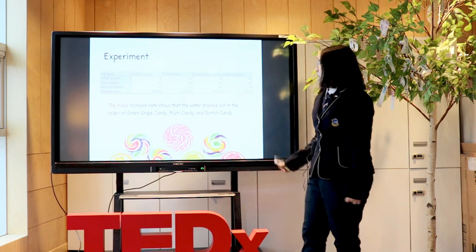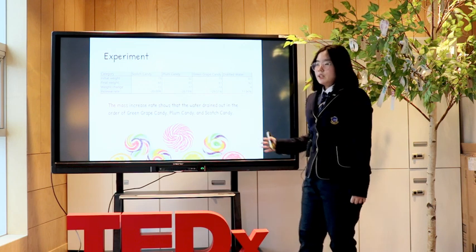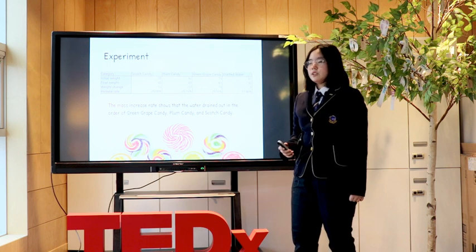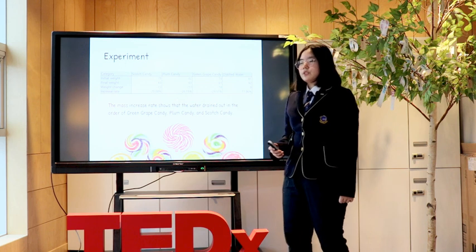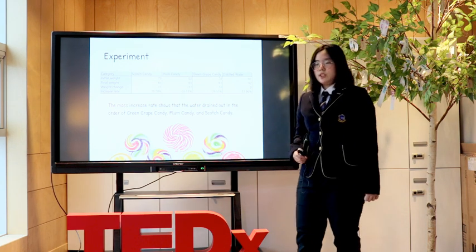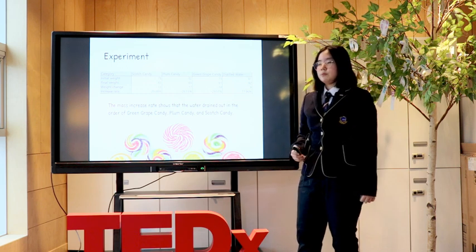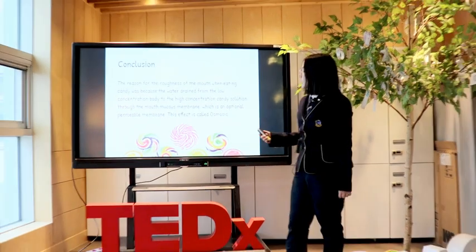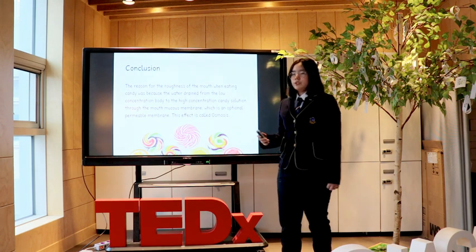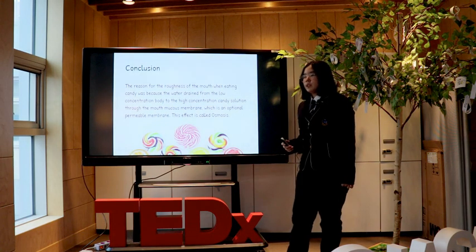The results of the experiment were as follows. The mass change ratio showed that water drained out in the order of green grape candy, plum candy, and scotch candy. This is proportional to the sugar content — the higher the sugar content, the greater the osmotic pressure — causing water to drain from the inside of the relatively low concentration egg to the relatively high concentration candy solution. In the case of distilled water, the osmotic concentration inside the egg was higher than that of the distilled water, so the mass of the egg increased as water moved from the distilled water toward the egg. The experiment showed that the reason for the roughness of the mouth when eating candy is that water drains from the low concentration body toward the high concentration candy solution through the mouth's mucous membrane, which is a selectively permeable membrane. This effect is called osmosis.